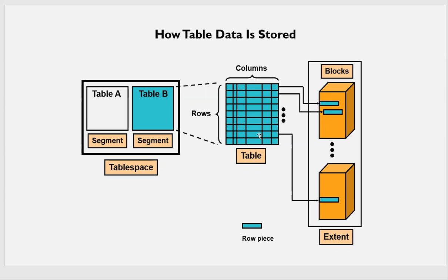This particular row is stored under this particular block, and there are so many blocks. A combination of all these blocks makes an extent. A group of extents resides under one segment, and a group of these segments makes the tablespace.